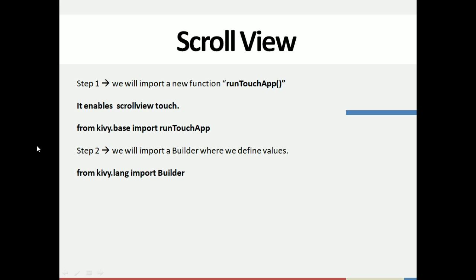First of all, we'll import a new function called runTouchApp which is available in the Kivy library. When we import runTouchApp, it enables the scroll view touch. The code for that is: from kivy.base import runTouchApp.